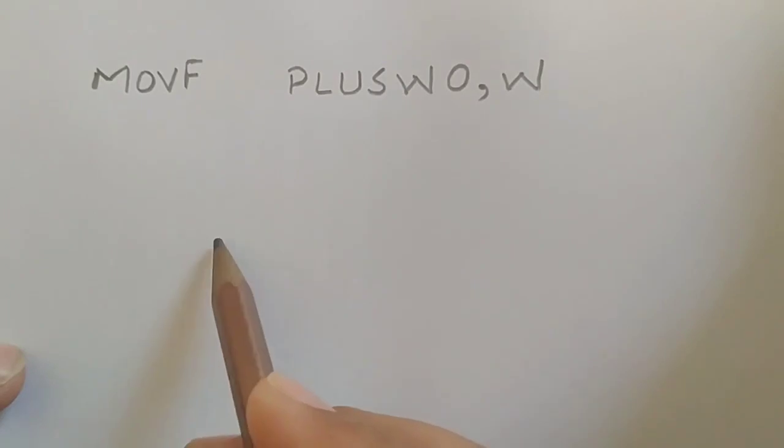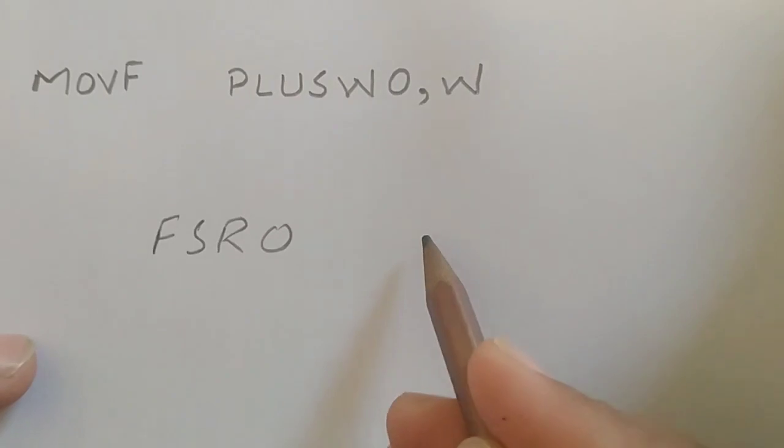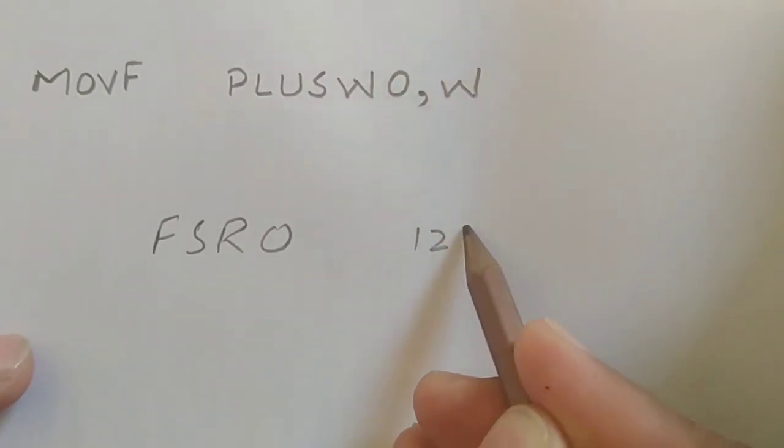File select register zero will be used, and we have defined some location. For example, I have used 124 hex as an address.